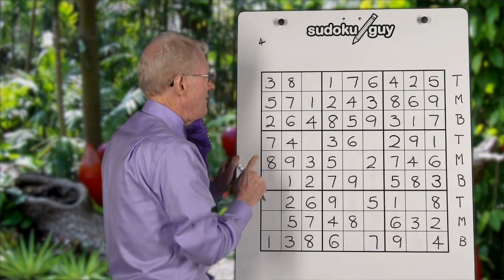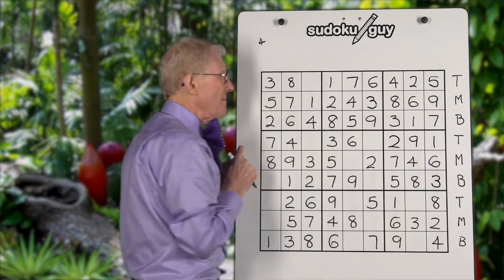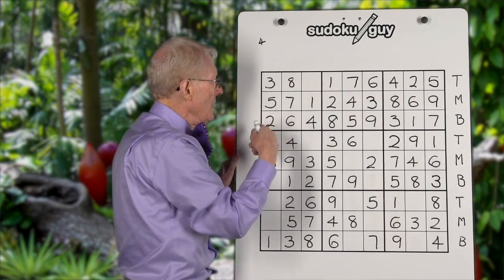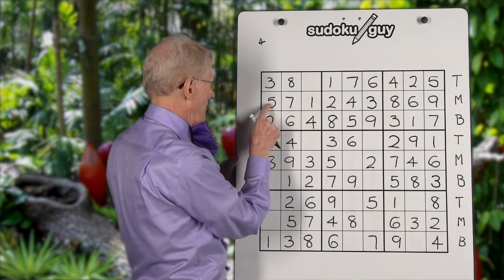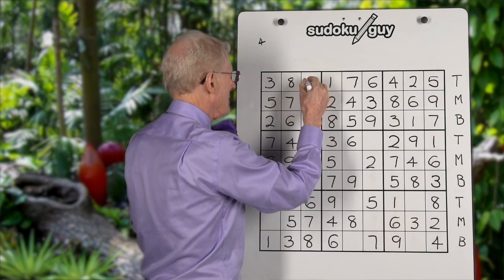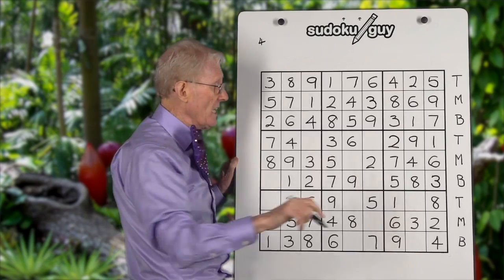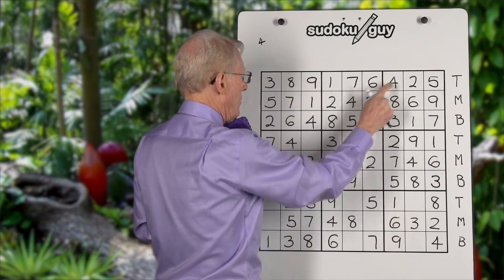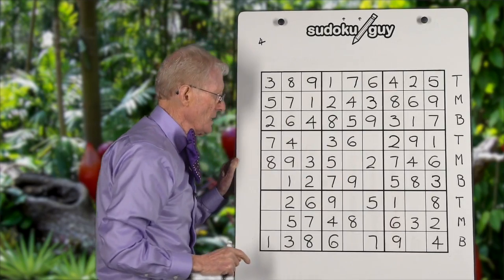Have you noticed that this block has only got one left and this row has only got one left? We can do it that way or we can do the block. I'll do the block — one, two, three, four, five, six, seven, eight — it's a nine. And if you want to self-check yourself, you can count one through nine that way as well.